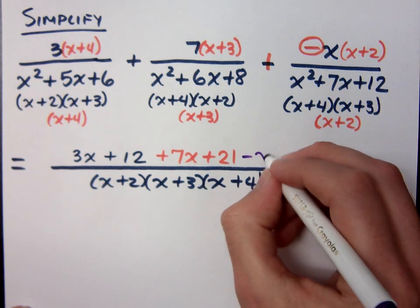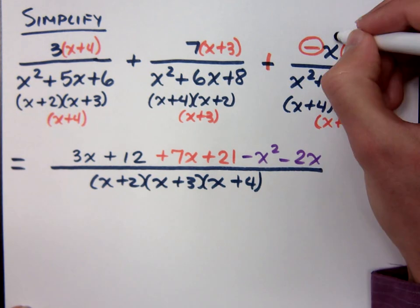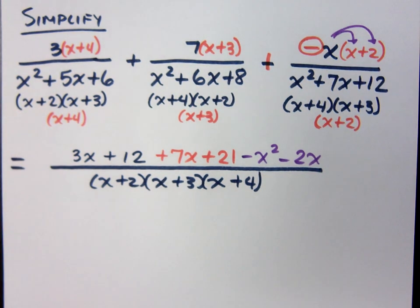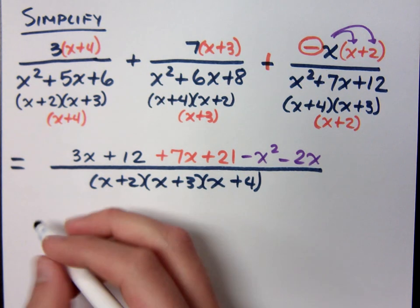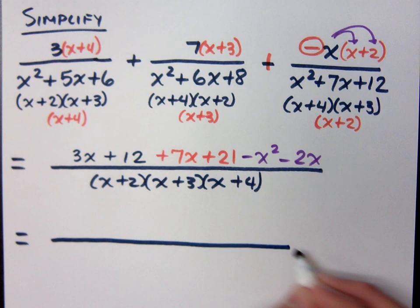Minus x squared minus 2x. Make sure that this x does distribute to both of those. A lot of students will tell me x squared and then 2 instead of 2x. Well, the next thing I need to do is to combine like terms in the numerator. So what do I get?